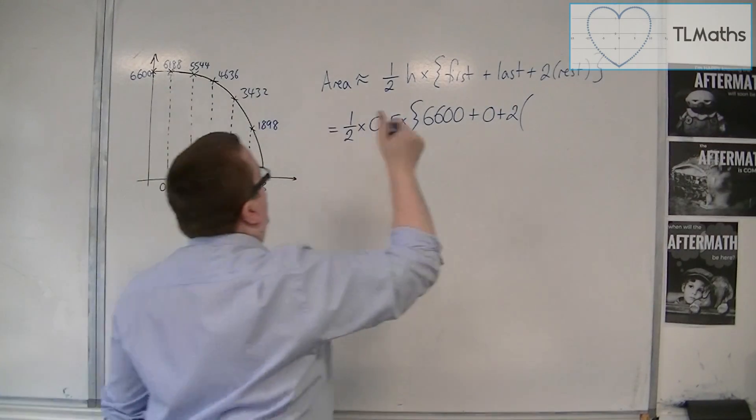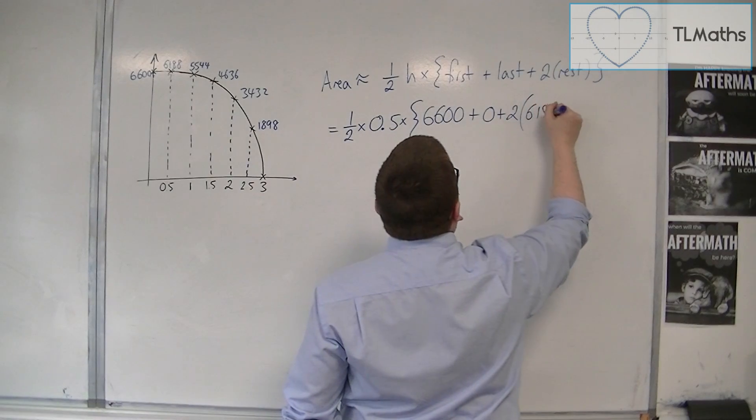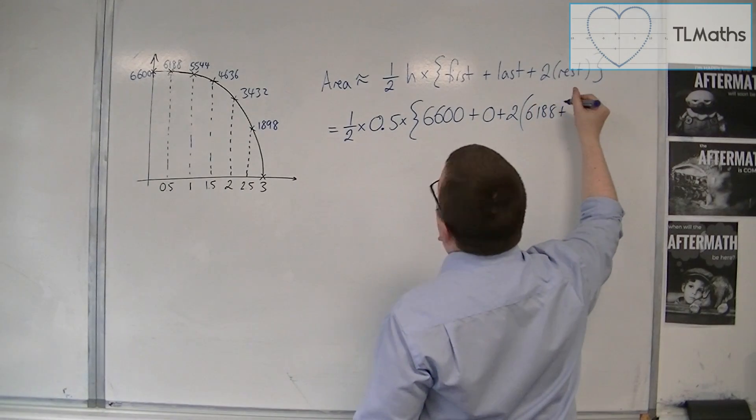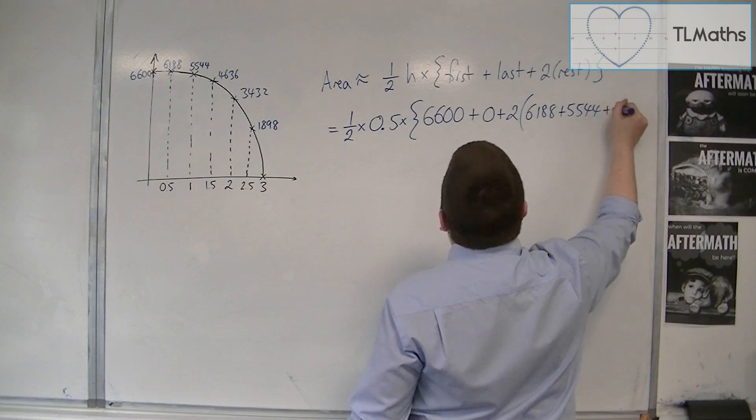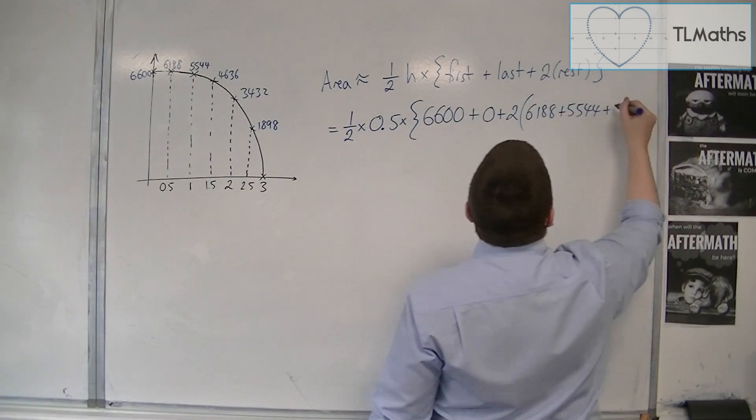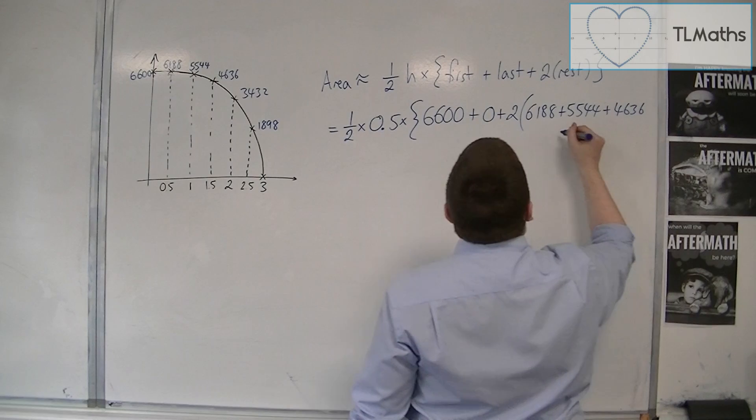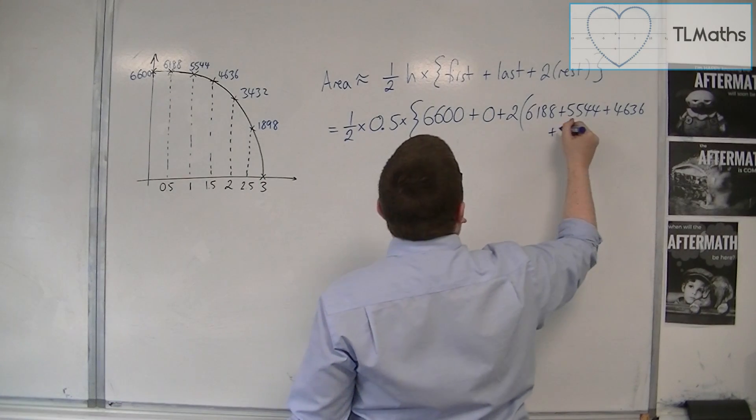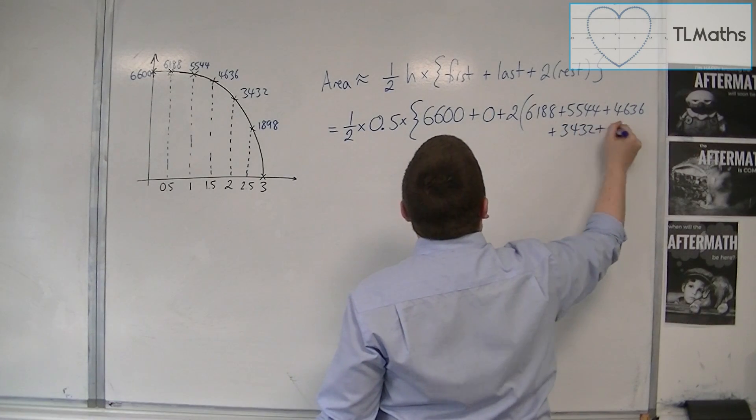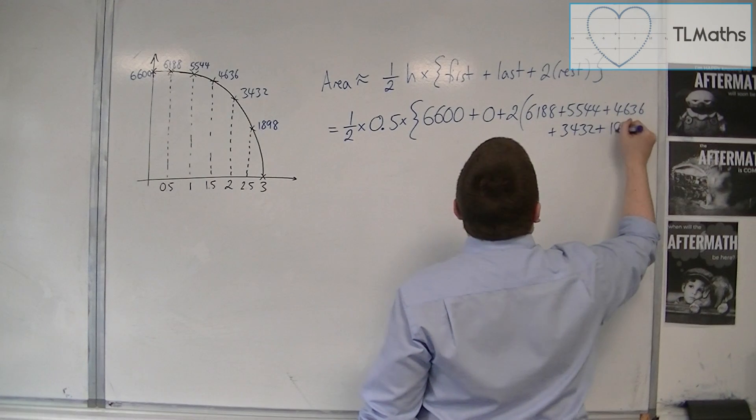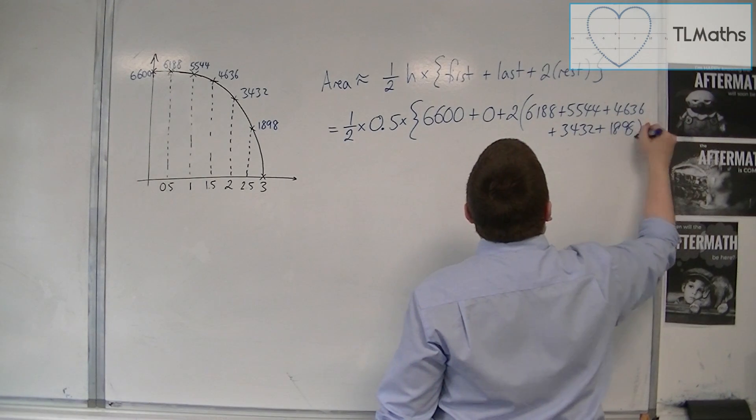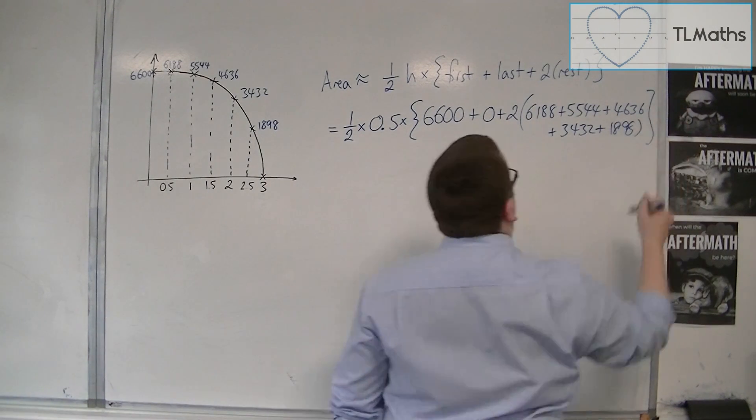So 6188 plus 5544 plus 4636 plus 3432 plus 1898.